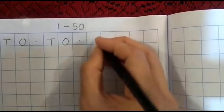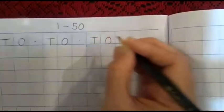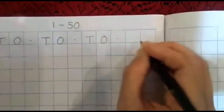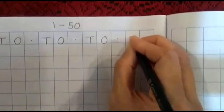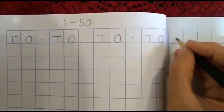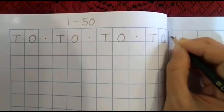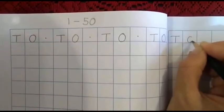Again a dot T and O. Again a dot T and O, and two more columns here are T and O.